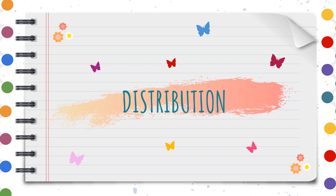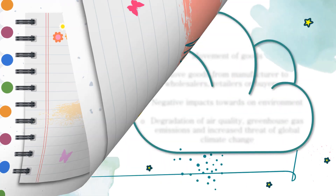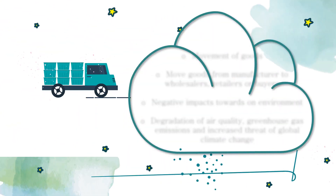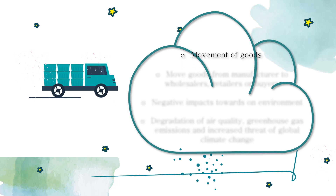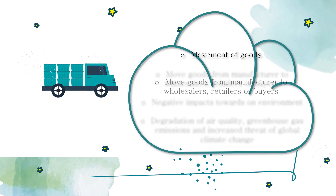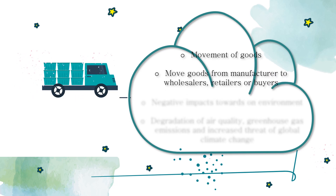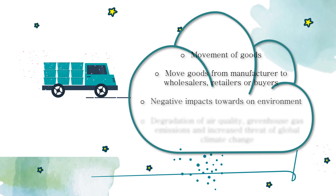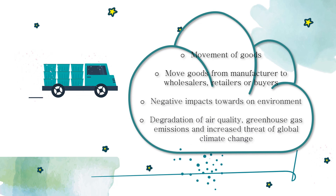Distribution management is the process used to oversee the movement of goods from supplier to manufacturer to wholesaler or retailer, and finally to the end consumer. However, the transportation used can have potential negative impacts on the environment — for example, degradation of air quality, greenhouse gas emissions, and an increased threat of global climate change.